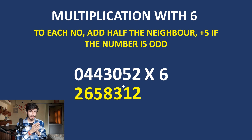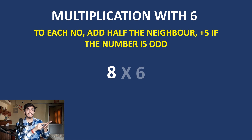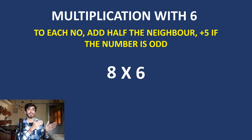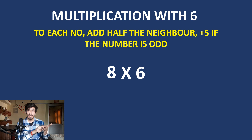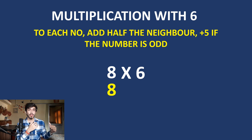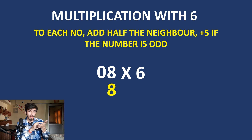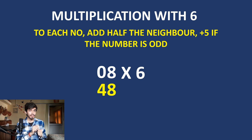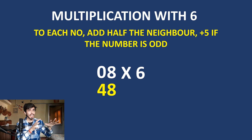In the Trachtenberg system, you don't need to learn multiplication tables. For example, 8 times 6 using the key: 8 has no neighbor and is even, so just 8. Adding a leading 0, for 0: add half of the neighbor, half of 8 is 4, and 0 is even so no addition of 5. Result: 48. You get 8 times 6 equals 48 without memorizing the table — just using the key.